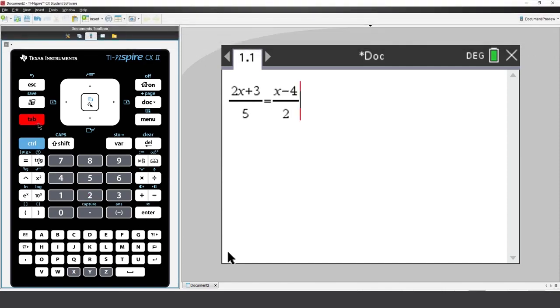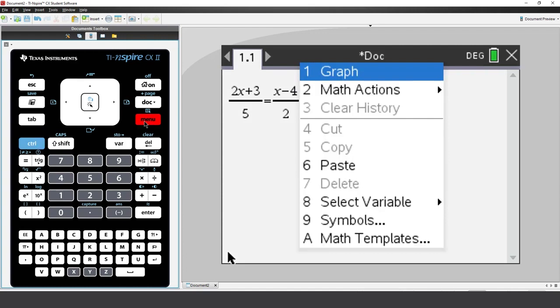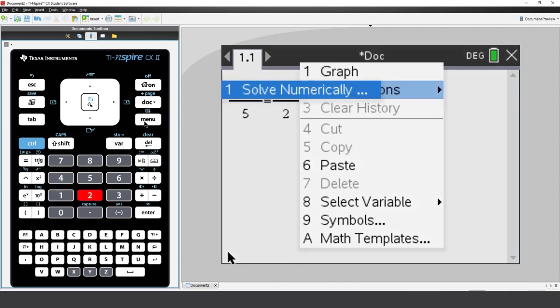Now that my equation has been entered, press Control followed by Menu. This is like a right mouse click on a computer. I want to select Math Actions. Again, I could arrow down, or just press the number next to the menu option. And then select Solve Numerically.